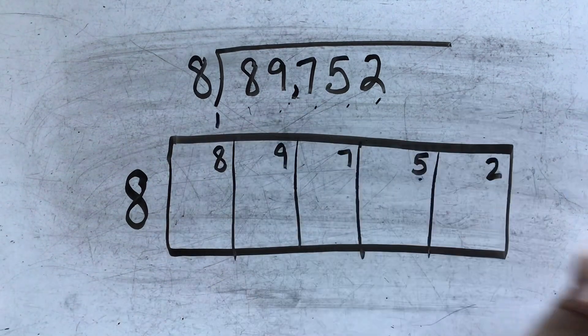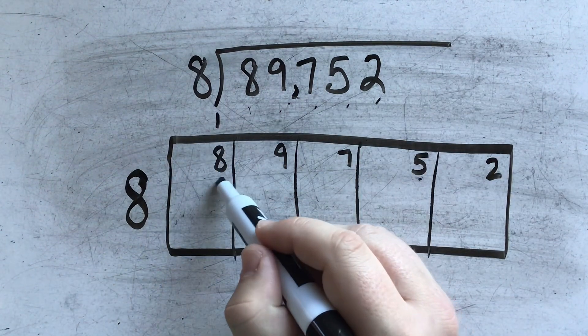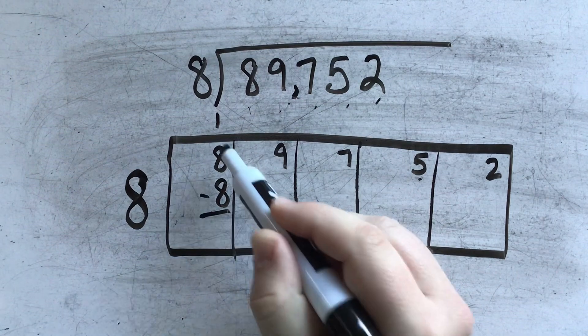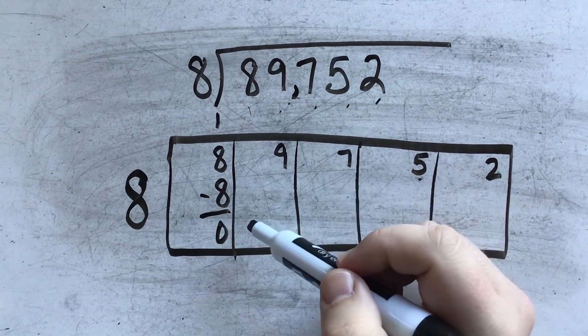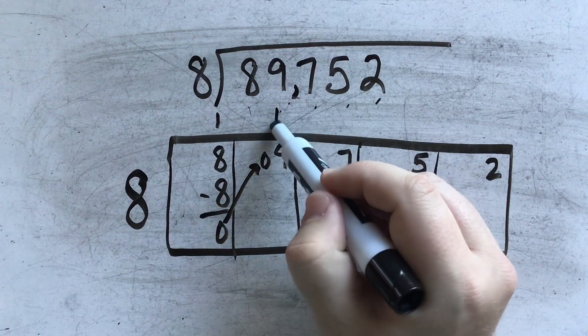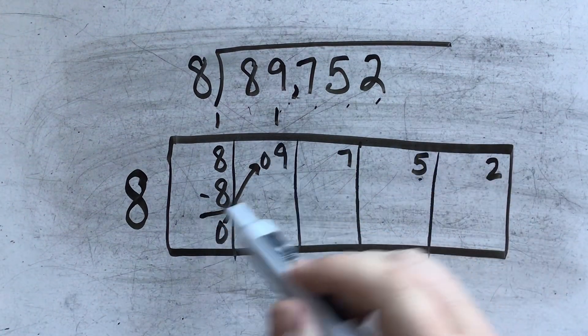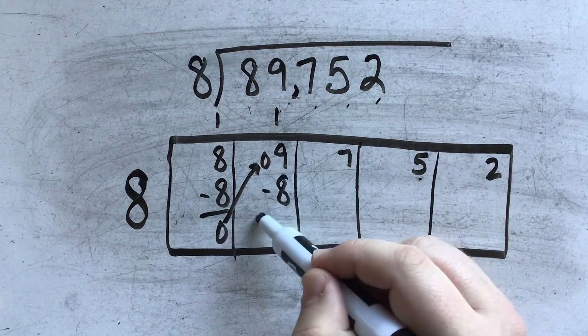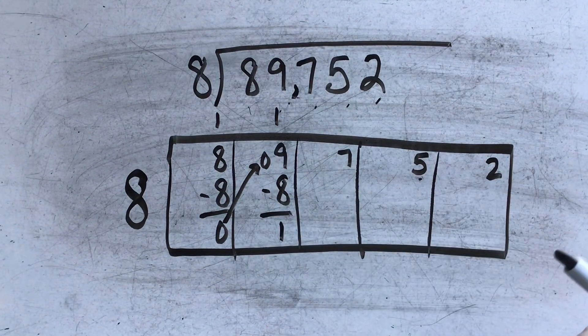And now I can start dividing. 8 divides 8 one time. 1 times 8 is 8. And when I subtract, I have 0 left over. 8 divides 9 one time. 1 times 8 is 8. And when I subtract, I again have 1 left over.